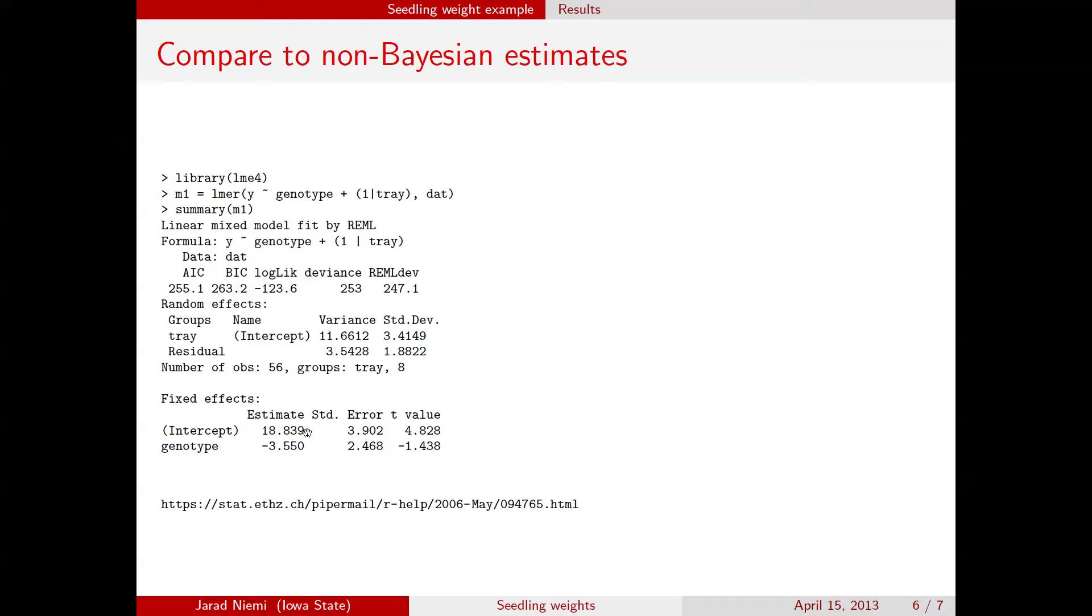Next is the estimate of the fixed effects. The design matrix here is a bit different. This is the estimate for the genotype 1, the mean with interval 10 to 20. And an estimate here then of the difference in the two. And in this case, they're taking genotype 2 minus genotype 1. So ours was the negative of this. But we estimated about 3.5. And the estimate here is about 3.5. So the results seem to coincide with the Bayesian and non-Bayesian estimates.